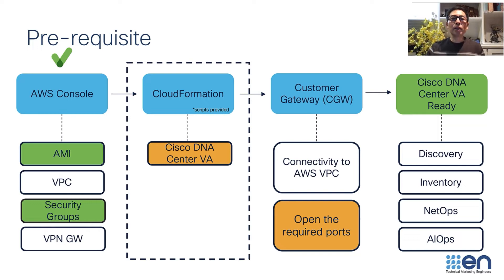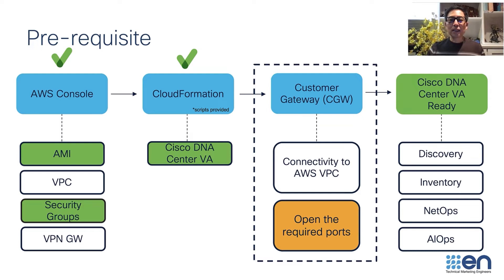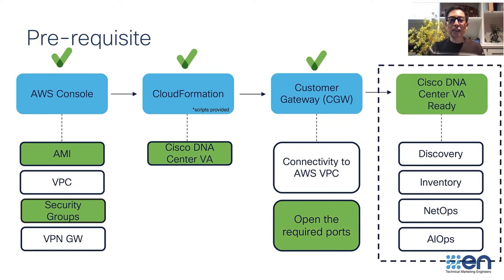In the meantime, you can start updating your security group to add those port numbers so your DNA Center VA can access your network devices on your enterprise side. Once DNA Center is finished with the installation, you can web in to your DNA Center VA with the IP address that was set during the CloudFormation bring-up, and start using all the features that you would normally get on your on-prem Cisco DNA Center appliance.